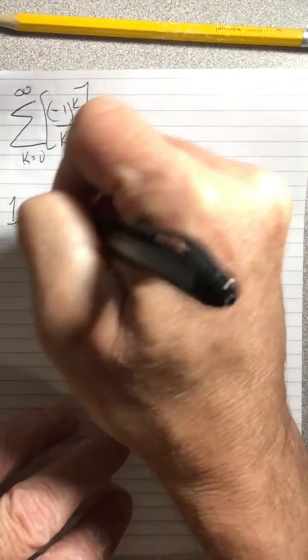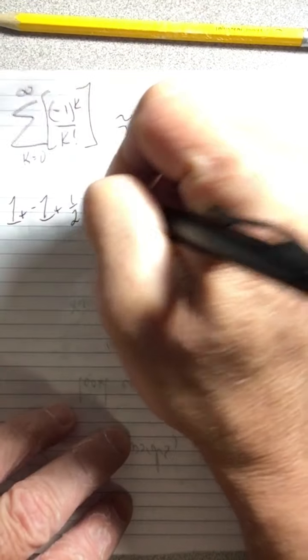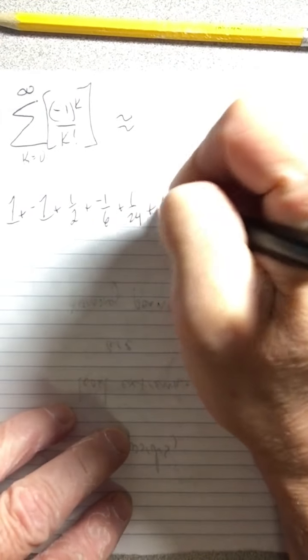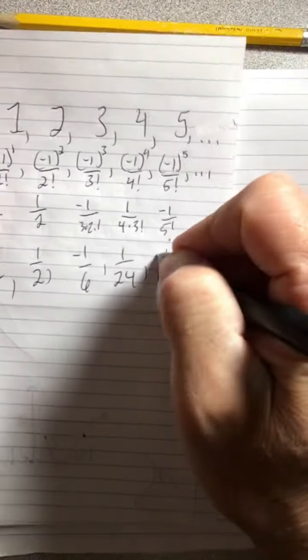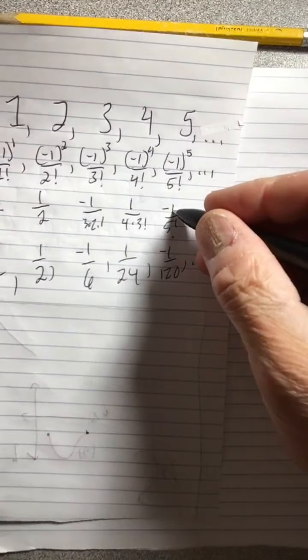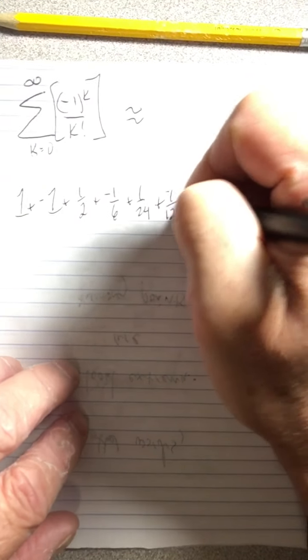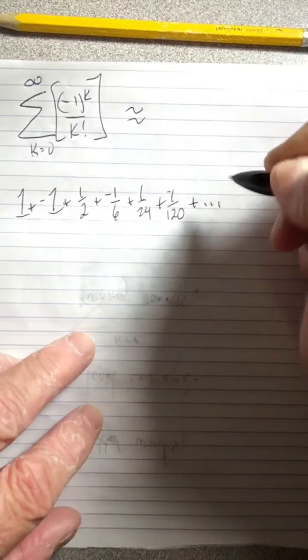We're going to take the 1 plus the negative 1 plus the half plus the negative 1/6 plus the 1/24 plus the 1 over... wait, there should have been a negative. Oh yeah, I left off a negative right there. Sorry, that was a negative and then a negative. Hopefully you caught that when you were writing your notes.